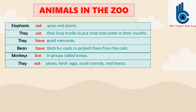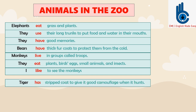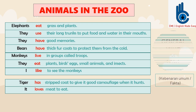They eat plants, birds, eggs, small animals, and insects. I like to see the monkeys. Tiger has a striped coat to give it good camouflage when it hunts. It loves meat to eat.